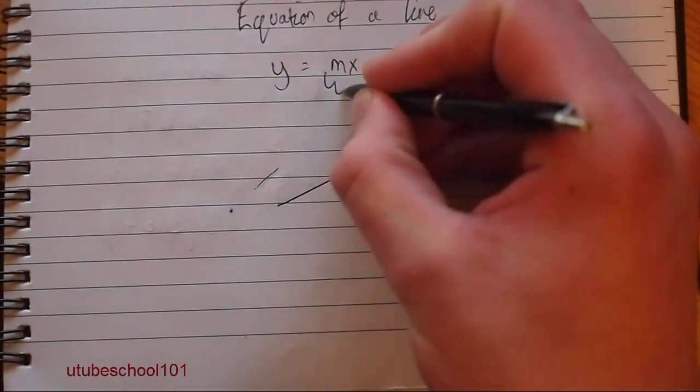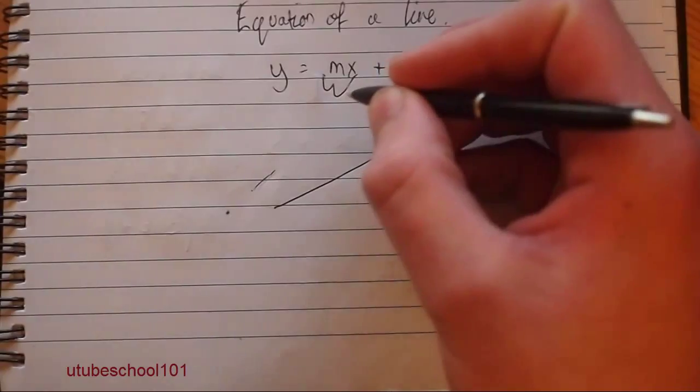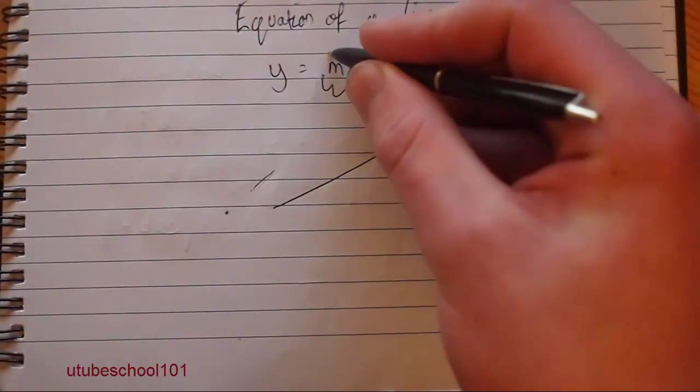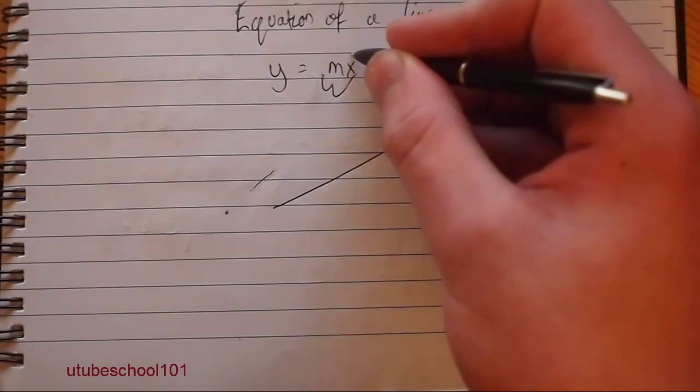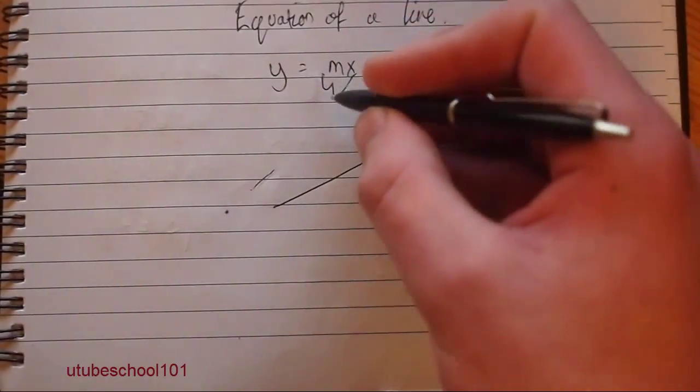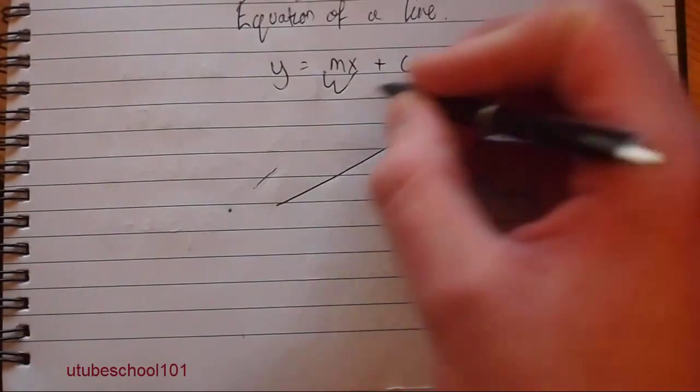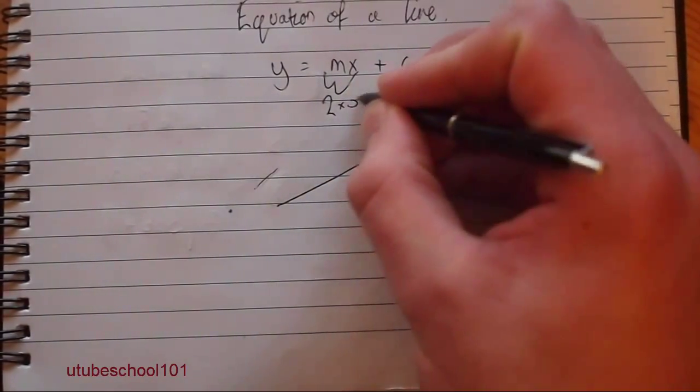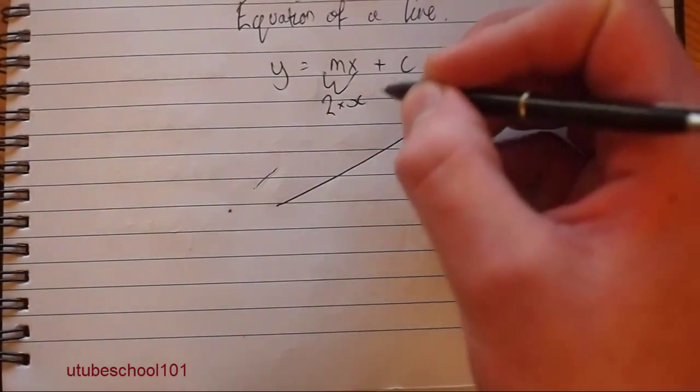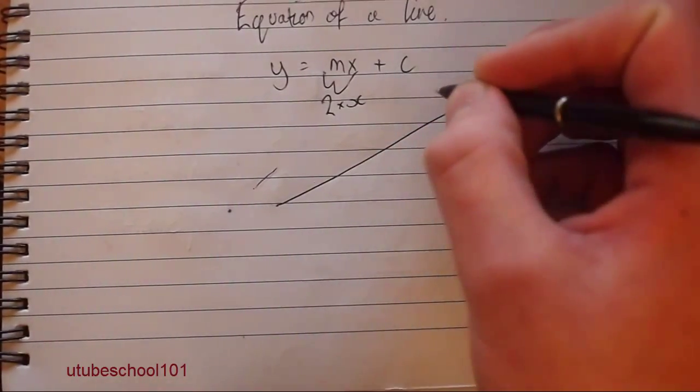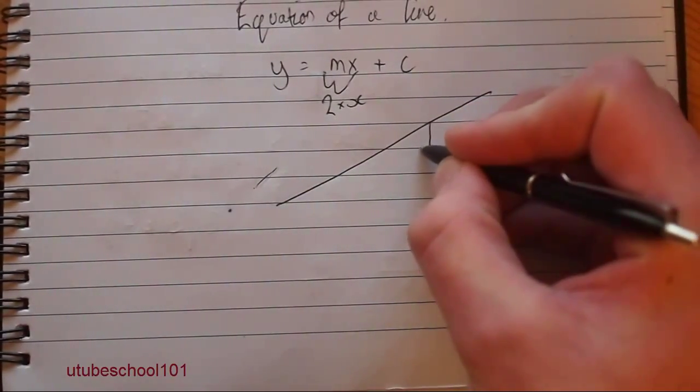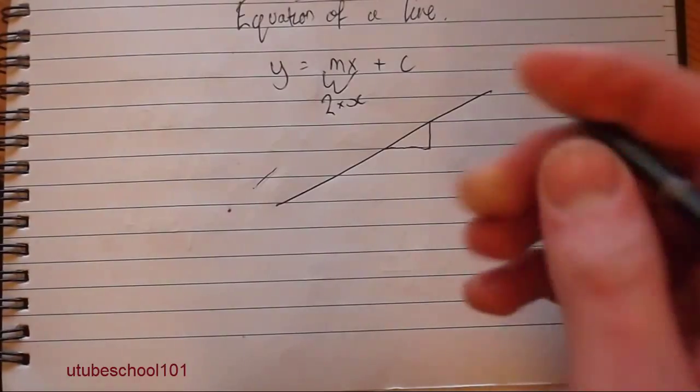So first off is this bit here, the mx, and essentially that just means a value which is m multiplied by x. So for example, it could be two times x, and this gives you the gradient of the line. And what I mean by gradient is how steep it is.